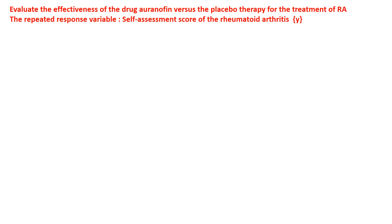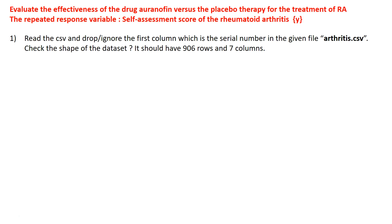At a high level, the objective is to evaluate the effectiveness of the drug Ornafin versus the placebo therapy for the treatment of RA. The repeated response variable is the self-assessment score Y. Question 1 asks you to import the relevant libraries, read the CSV file (arthritis.csv from the description link), drop the first serial-number column, and verify the dataset has 906 rows and 7 columns.